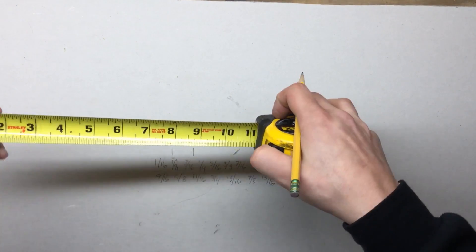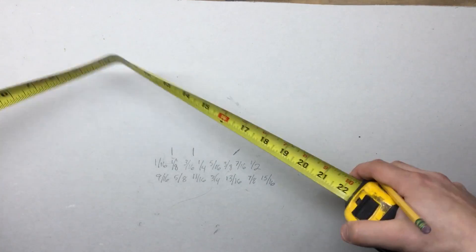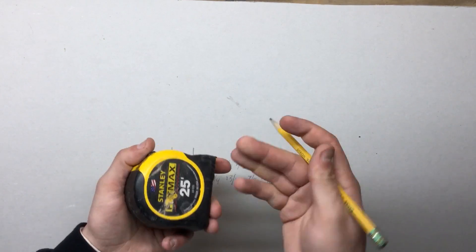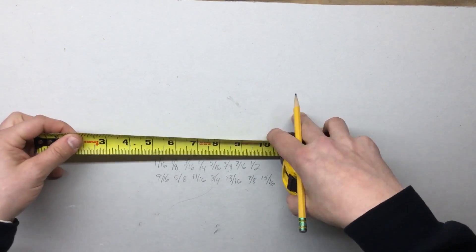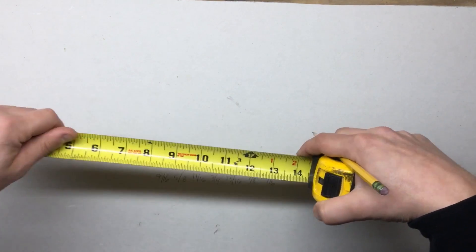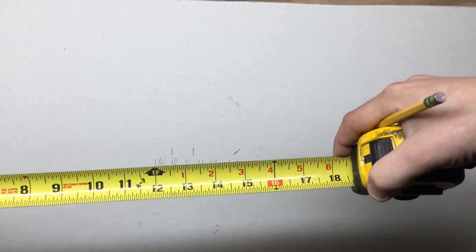So now that you have that down, reading a tape measure, there's a couple tricks. You can actually do some math with a tape measure pretty easily. We'll take a simple measurement like, let's say, sixteen inches. If you want to know what half of sixteen is,